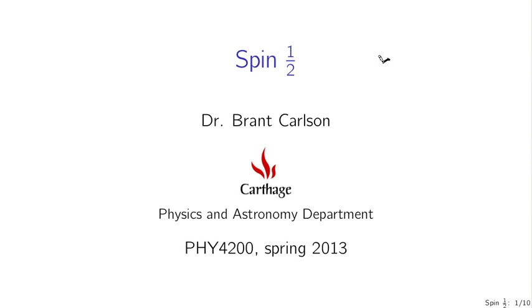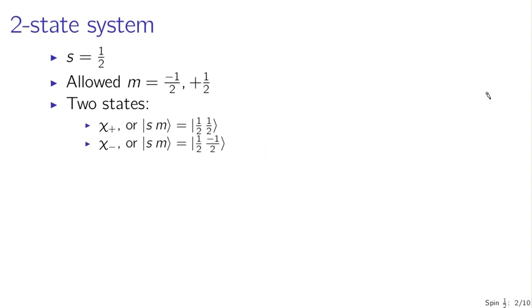We're working with S equal to one-half, which is our spin angular momentum counterpart for the L quantum number in orbital angular momentum. This means we have an M counterpart of either minus one-half or plus one-half. The two states are chi plus and chi minus, also written as up arrow and down arrow — spin up and spin down.